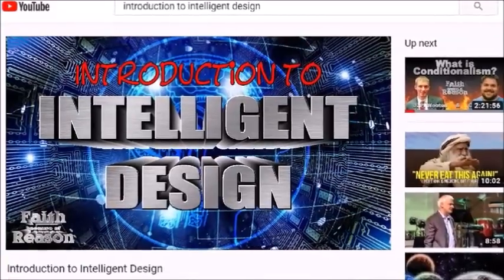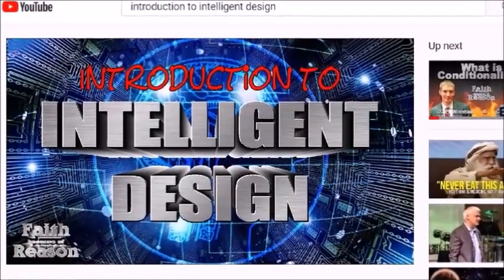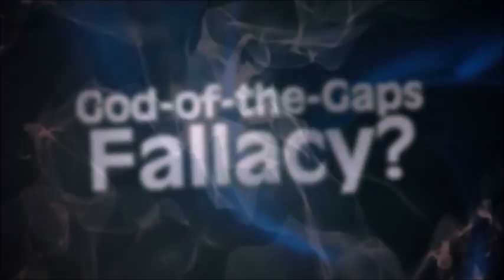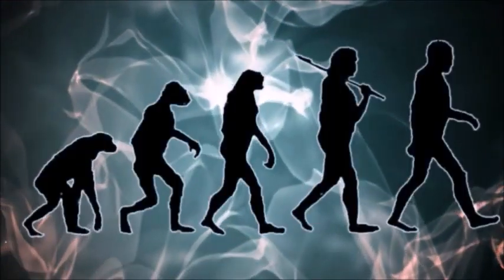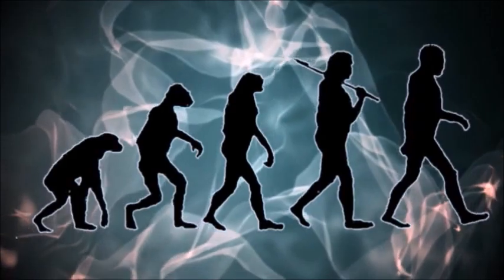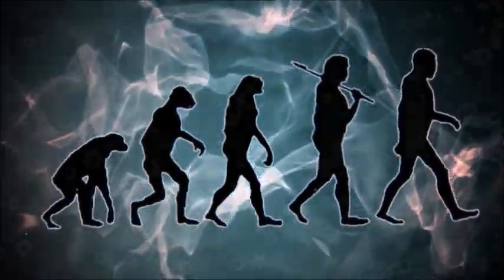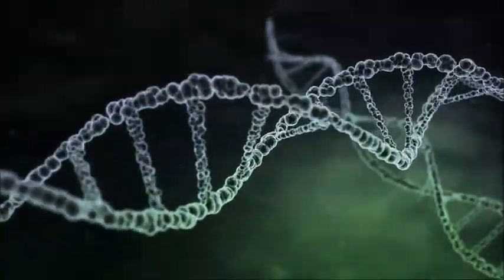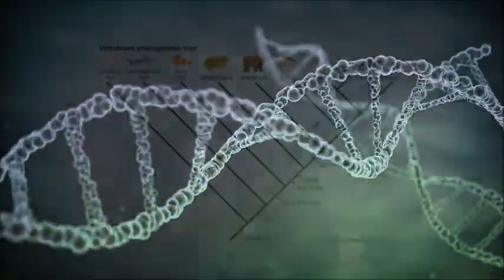In my previous video, I introduced the theory of Intelligent Design and answered some preliminary objections to it. Intelligent Design's competition, the theory of evolution, has two major pillars. The first is that all life descends from a single common ancestor, and the second is that purely natural forces are sufficient to accomplish this change. This video is aimed at the first of those two claims.